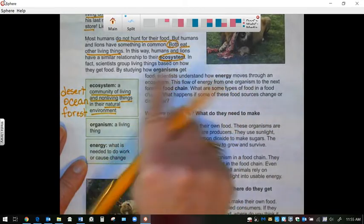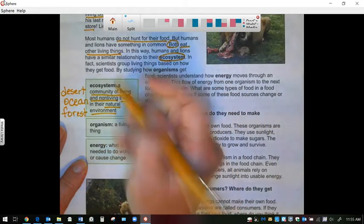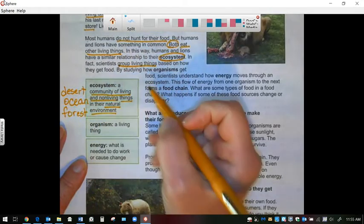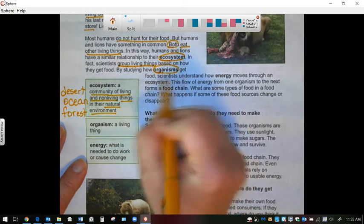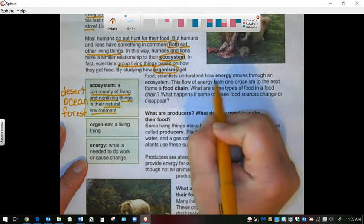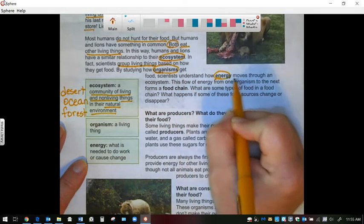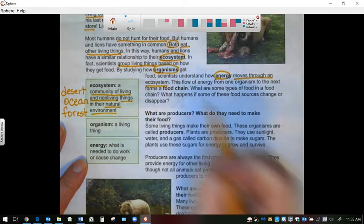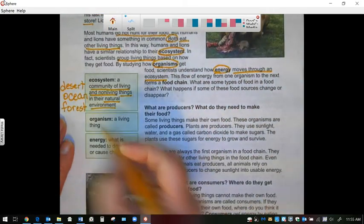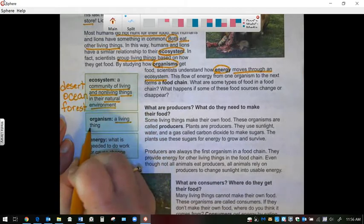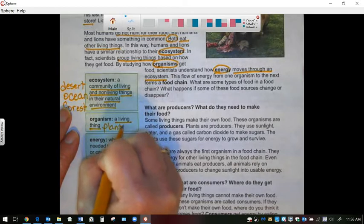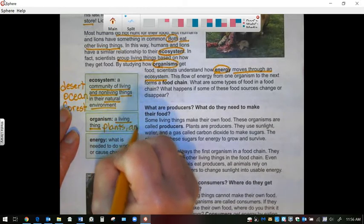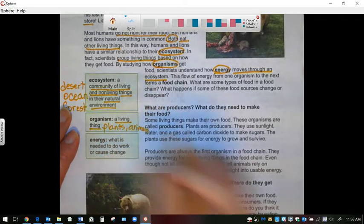In fact, scientists group living things based on how they get food. By studying how organisms get food, scientists understand how energy moves through an ecosystem. An organism is a living thing and that means all plants and animals are organisms.